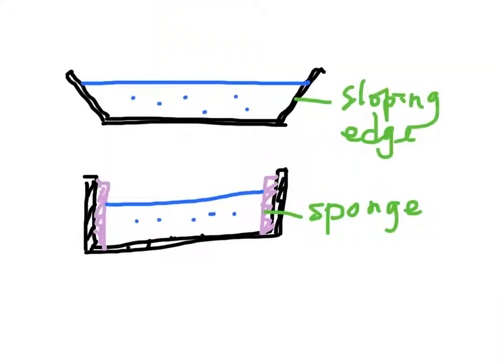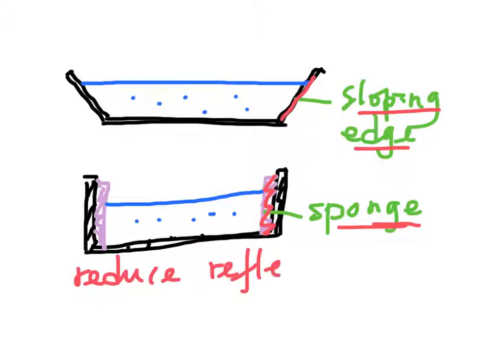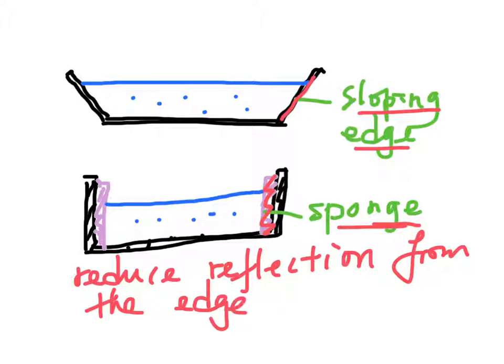Notice that a ripple tank usually has a sloping edge, or uses a sponge to wrap the inside part, in order to reduce reflection from the edge.